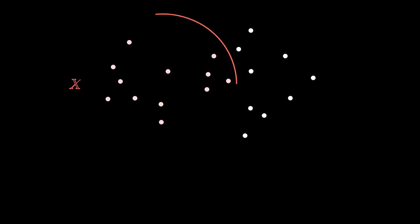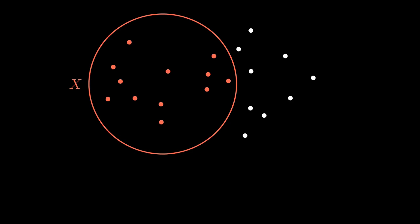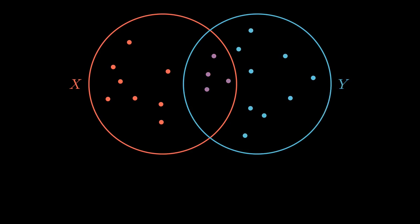Let's tackle inclusion-exclusion first. Here's a bunch of dots — these dots represent elements in some sets. I've got a set X, which I'm drawing as red dots, with a circle around those red dots. I've also got a set Y, and I'll draw the elements of the set Y as blue dots. Now, there are also some dots in between — these purple dots are elements of both set X and set Y.